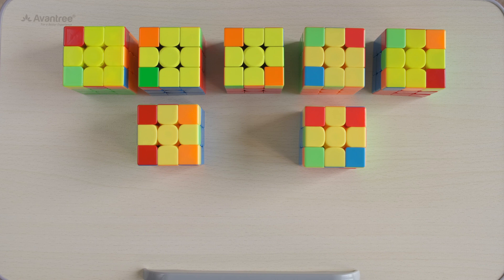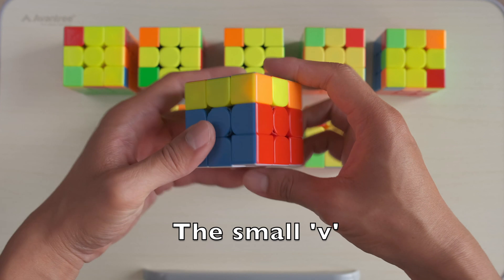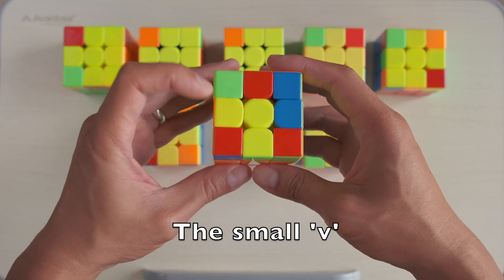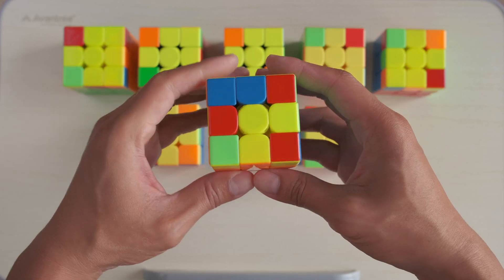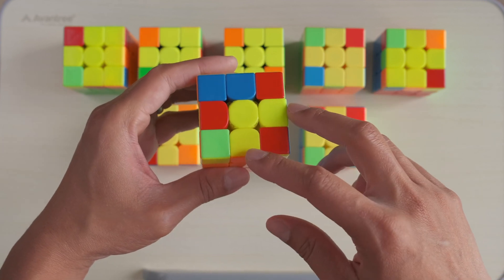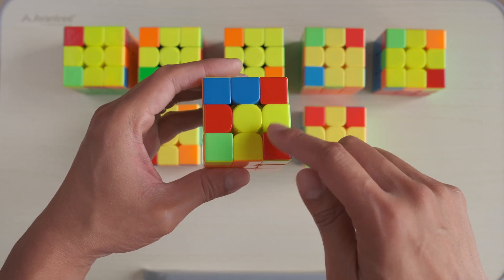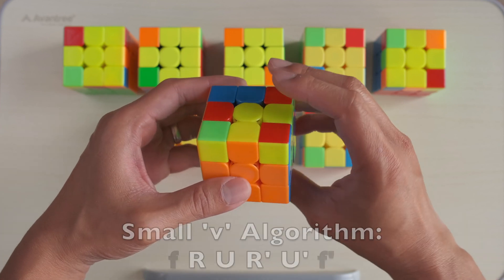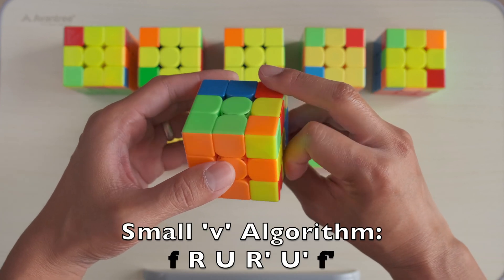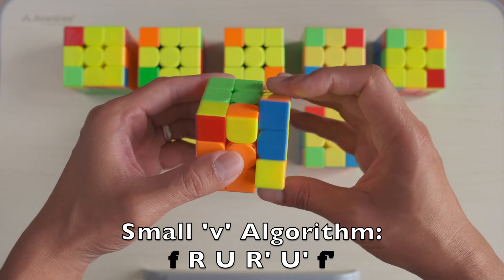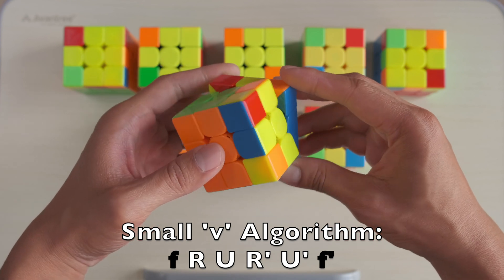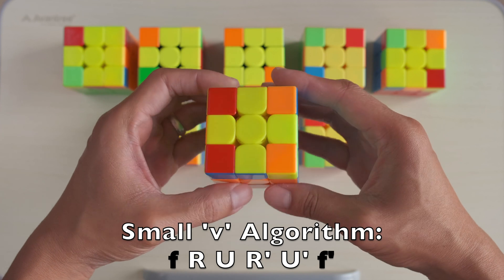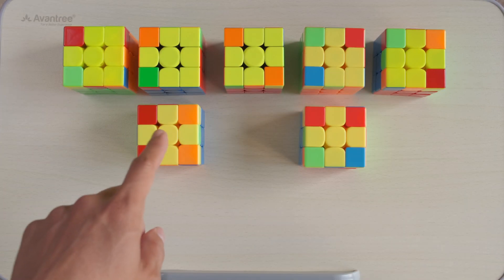Moving on to the second pattern you may encounter is the small v. When we see this pattern, place it at the bottom right corner. The algorithm for this one looks very familiar to the first one, just with a wide f: small f, R, U, R', U', small f'. Here we see one of the cross patterns again.